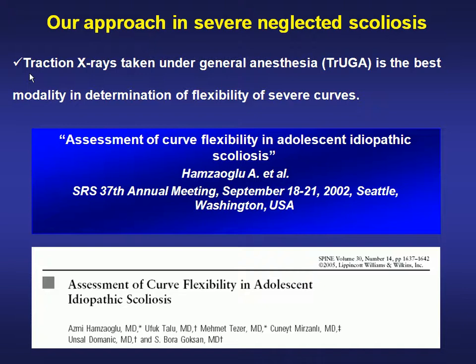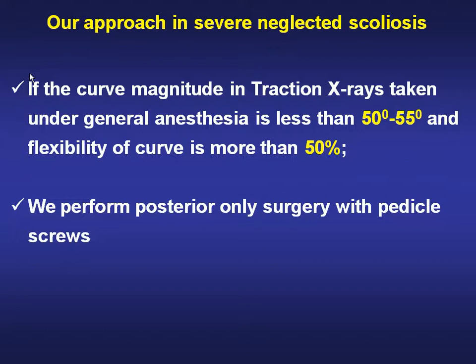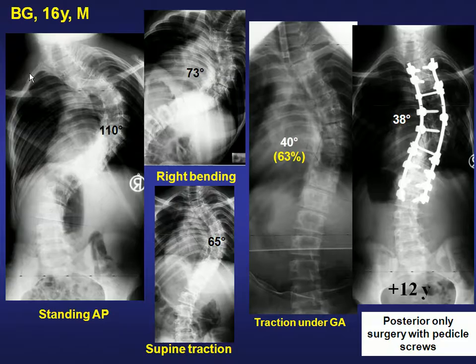In our experience, traction x-ray under general anesthesia is the best modality for determining flexibility of severe curves. If the curve magnitude on traction x-ray under general anesthesia is less than 50 to 55 degrees and flexibility of the curve is more than 50%, we perform posterior-only surgery.